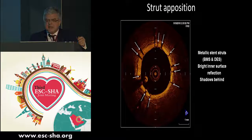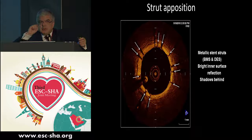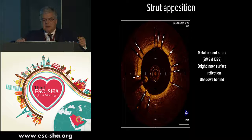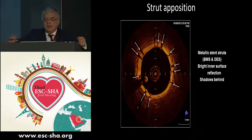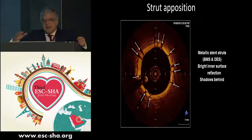Let me give you a few examples to look at strut apposition. This is very important because it shows whether there is good, perfect apposition of the struts. You can see the brightness of the surface reflection and the shadowing behind, and you can exactly locate — for both bare-metal stents and drug-eluting stents — the exact location and how well opposed they are on the coronary vessel. This nicely shows the distribution of the struts and the shadowing behind them relative to the intima.